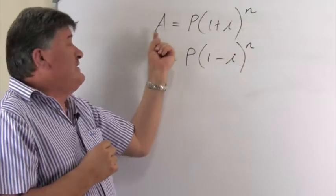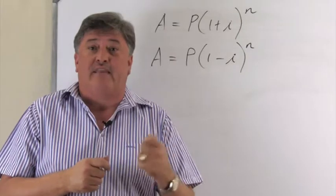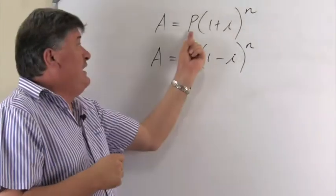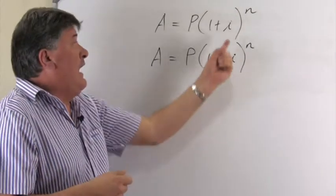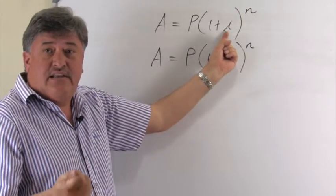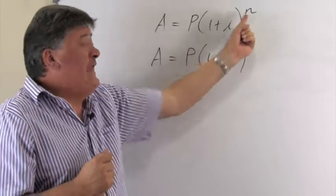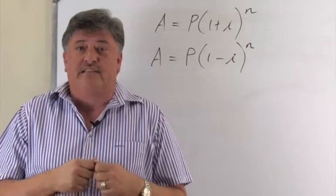where A is our future value or the value at the end of the period, P the present value or the value that we invest, I represents the interest rate in a decimal number, and N how long the time period.